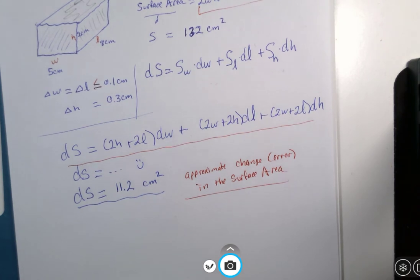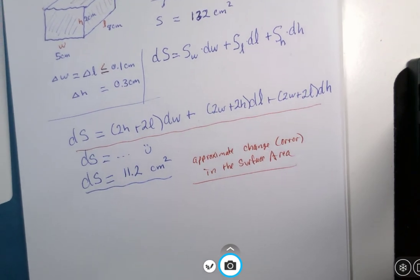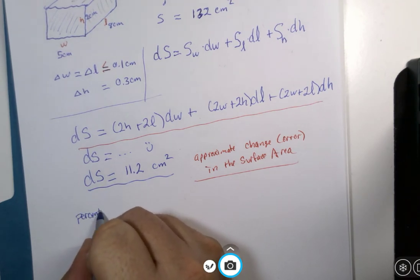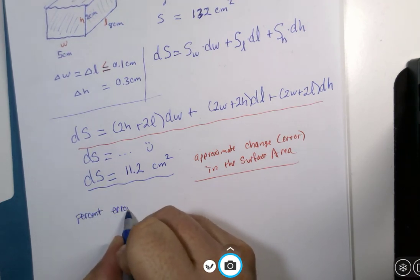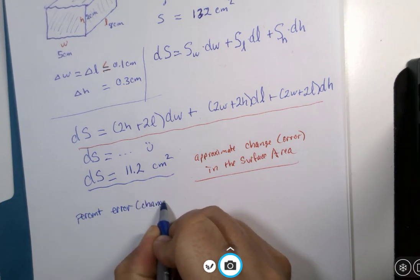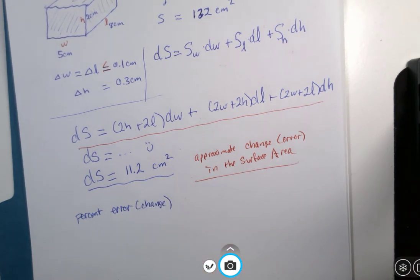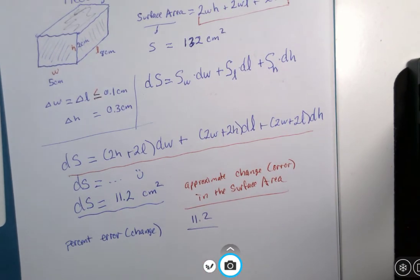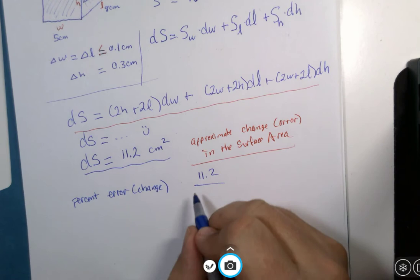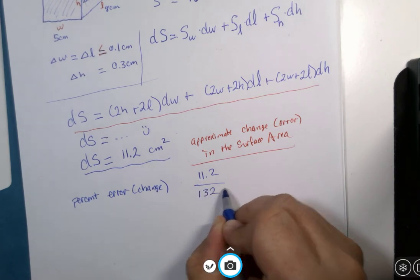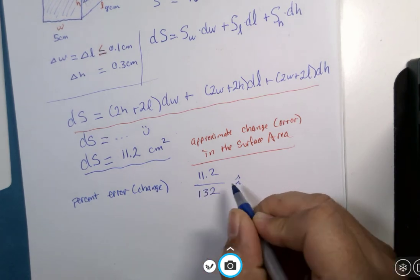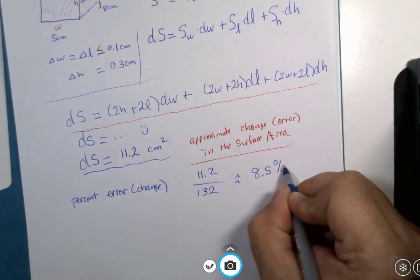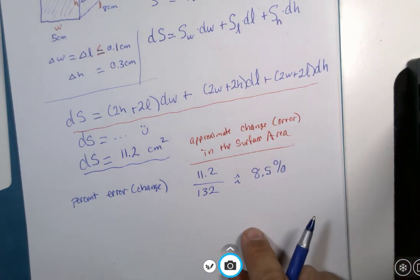Now like we did last time, I'm sort of curious. What is the percent error or change? And to do that, what we would do is we would take the 11.2 here and divide it by the actual surface area of 132. And we find ourselves at about 8.5 percent. It's not exactly, but it's close to 8.5 percent.